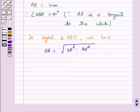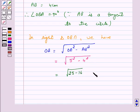Now OA is given to us as 5, therefore OB is equal to the square root of 5 squared minus 4 squared, and this is equal to the square root of 25 minus 16, and this is again equal to the square root of 9, which is equal to 3.